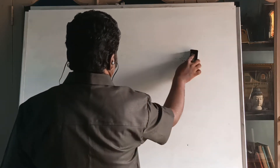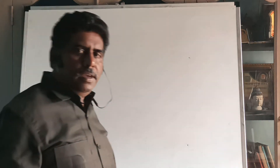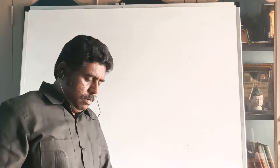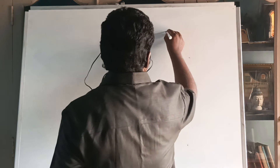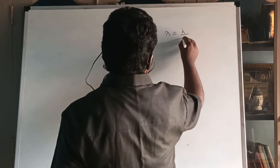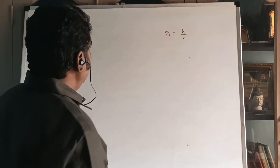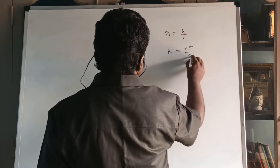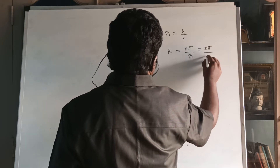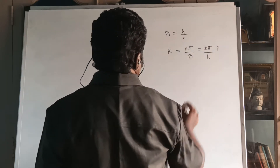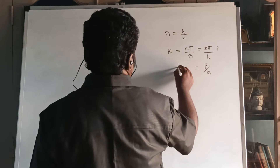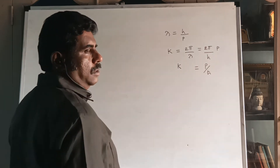For that, we should take the de Broglie approach. Consider a particle in motion. A wave is always associated with the motion of the particle, called the de Broglie wave or matter wave, where λ = h/p, or p = mv. We know the propagation vector k = 2π/λ. Substituting λ = h/p, this equals p/ℏ, because 2π/h is 1/ℏ. So the propagation vector k = p/ℏ.